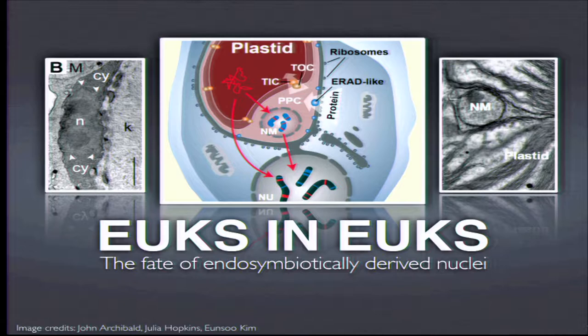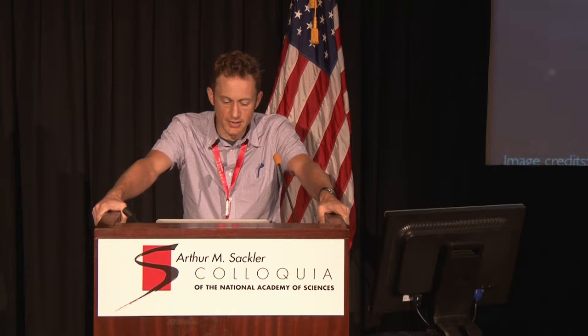I'm going to provide an overview of a system that we've been working on in my lab for a decade or so, then finish off by touching on a new group of organisms that sit at the very opposite end of the spectrum between a fully integrated organelle and a quasi-transient endosymbiont. These two examples provide interesting perspectives on how eukaryotic cells engage in symbiotic relationships with other eukaryotes.